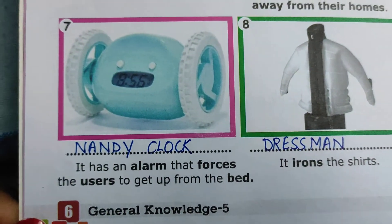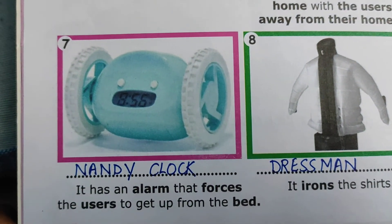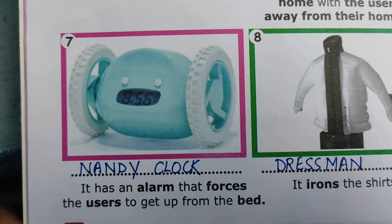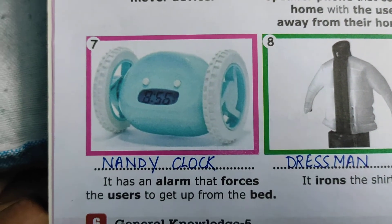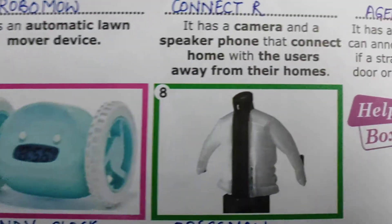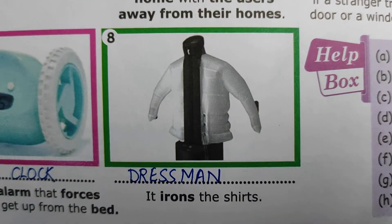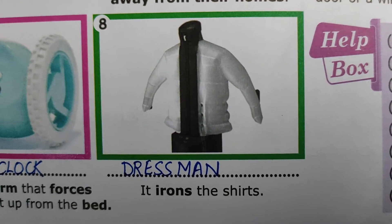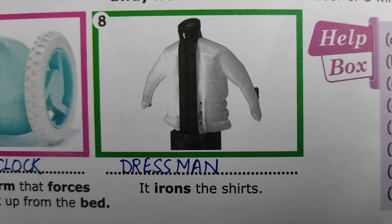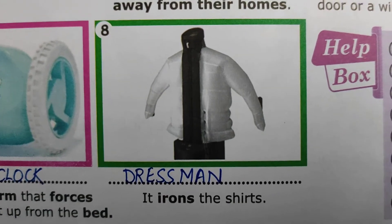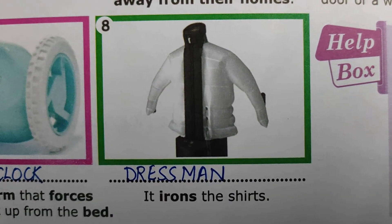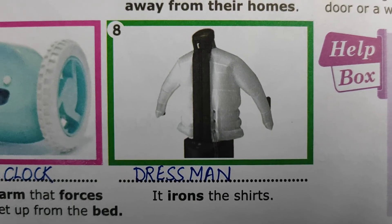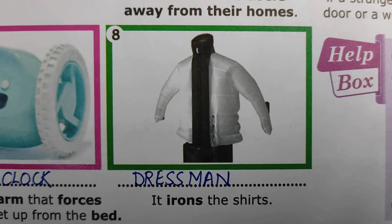Next is an alarm that forces users to get up from the bed, and this alarm is known as the Nandy Clock. The next one is the Dress Man — it is called a dress man because it irons shirts. As you can see in the picture, the shirt is put on this device and it gets ironed, which is why this robotic machine is called a Dress Man.